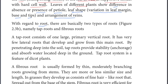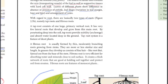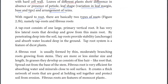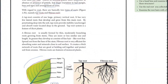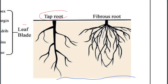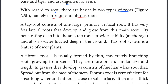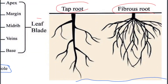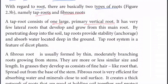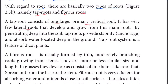With regard to roots, there are basically two types: taproot and fibrous root. The taproot consists of one large primary vertical root, with very few lateral roots that develop and grow from this main root.